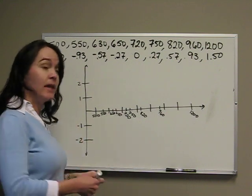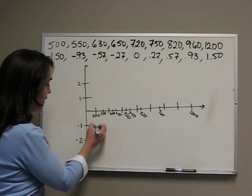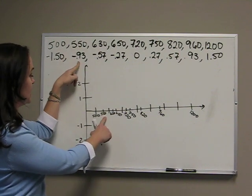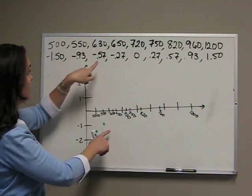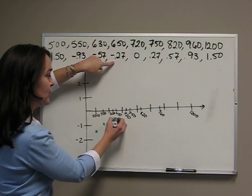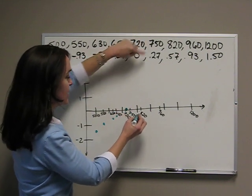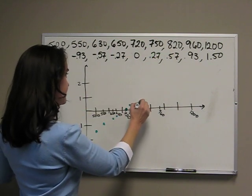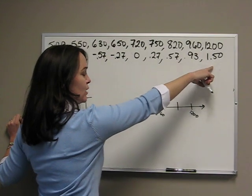My first point is going to be 500, negative 1.5. So I go to 500, negative 1.5, and I put a dot. 550, negative 0.93, getting a little closer to 0. 630, negative 0.57. 650, negative 0.27. 720, 0. 750, 0.27. 820, 0.57. 960, 0.93. And 1200, 1.5.